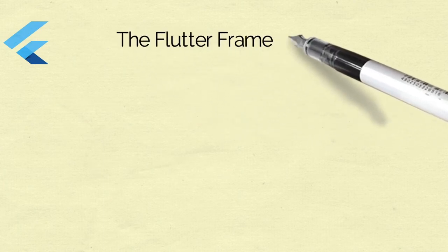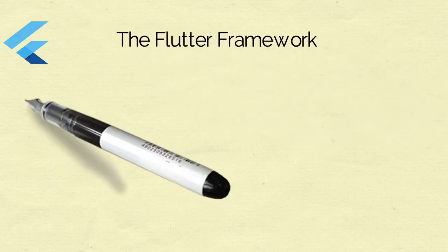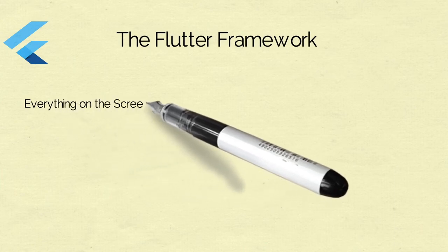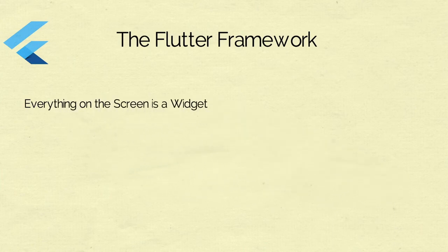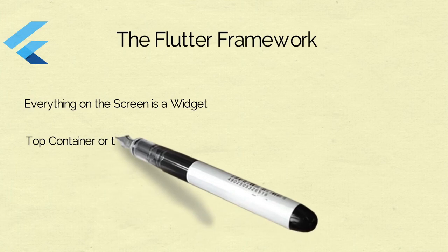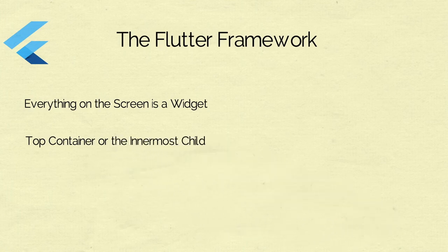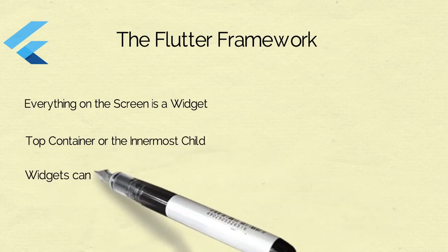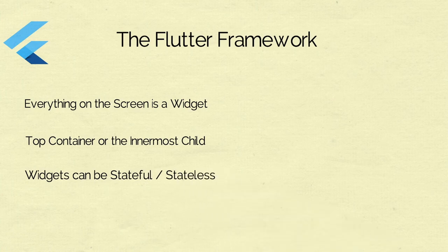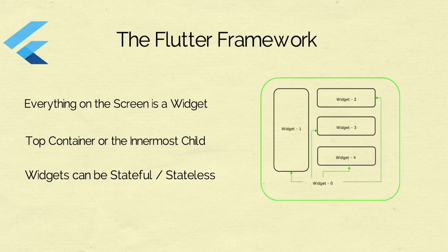Let's understand the Flutter framework and how it looks. In Flutter, everything on the screen is a widget — whether it is the topmost container or the innermost child, it's a widget. And widgets are generally categorized into stateful or stateless widgets. Looking at the picture now, a screen consists of multiple widgets where widget 0 is the topmost container and widgets 1, 2, 3, and 4 are child widgets.